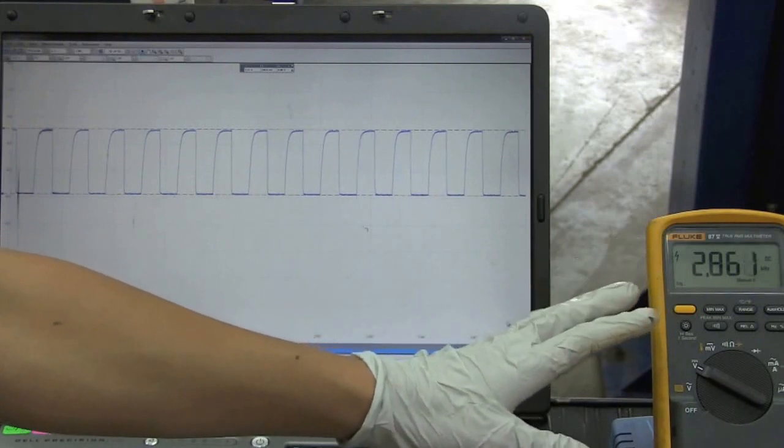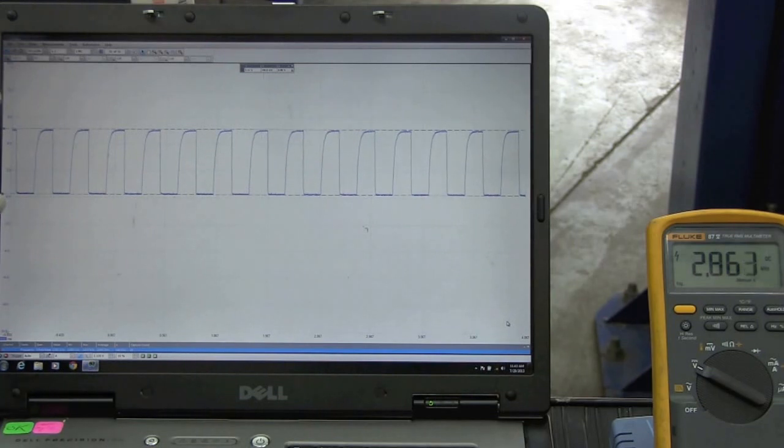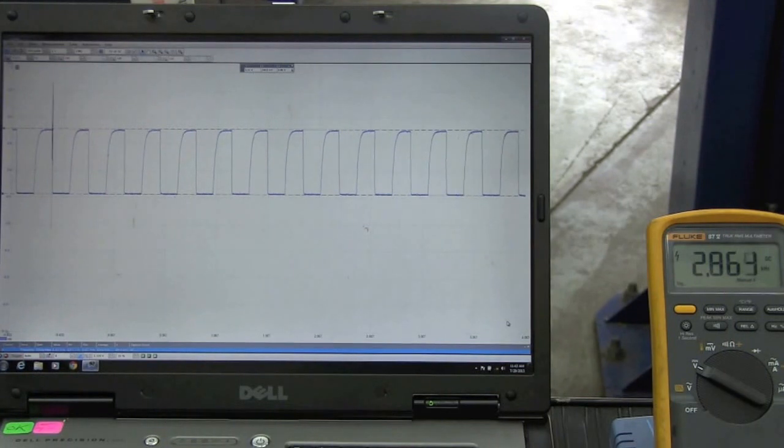Whereas with the meter, you're really just getting a number. Some of the other nice features of the oscilloscope is that it can also take a measurement as well. Let's take a closer look at that.